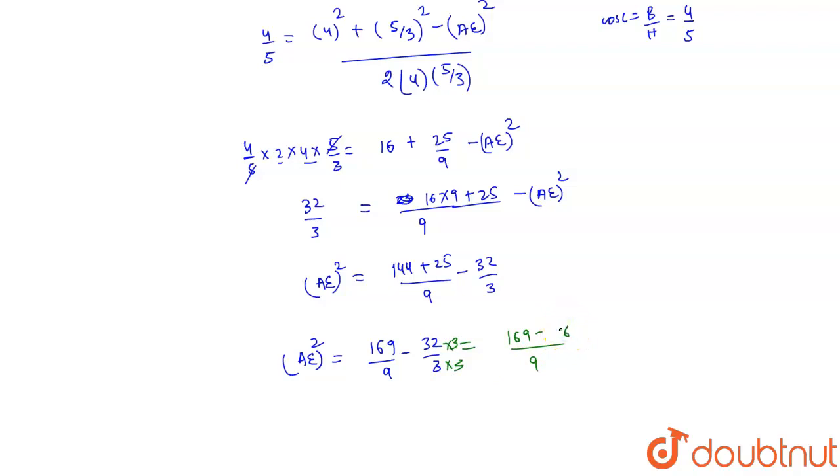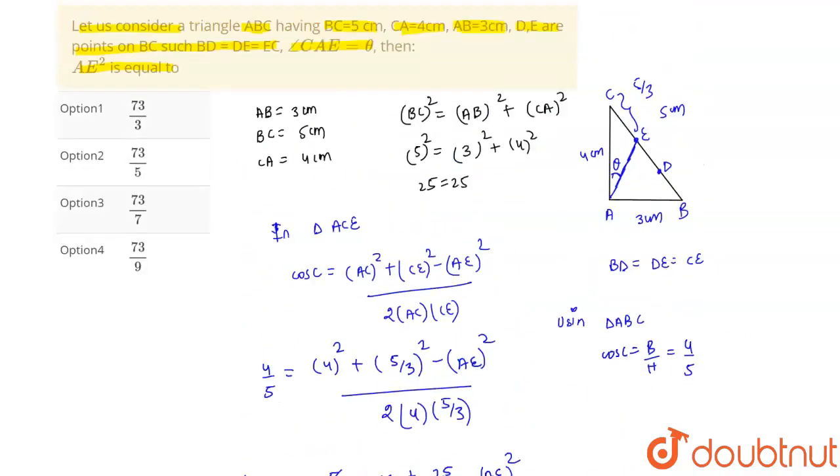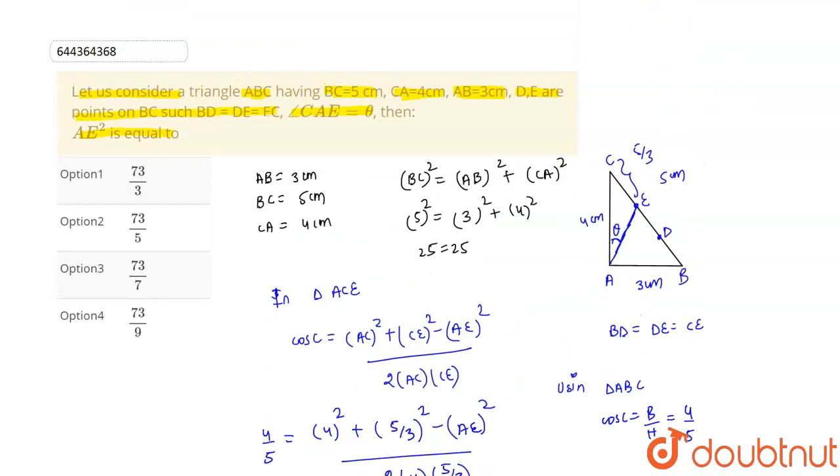So now 169 minus 96 is given as 73 by 9. So we can say that our answer for AE square is 73 by 9, so correct option is 73 by 9 that is option 4.